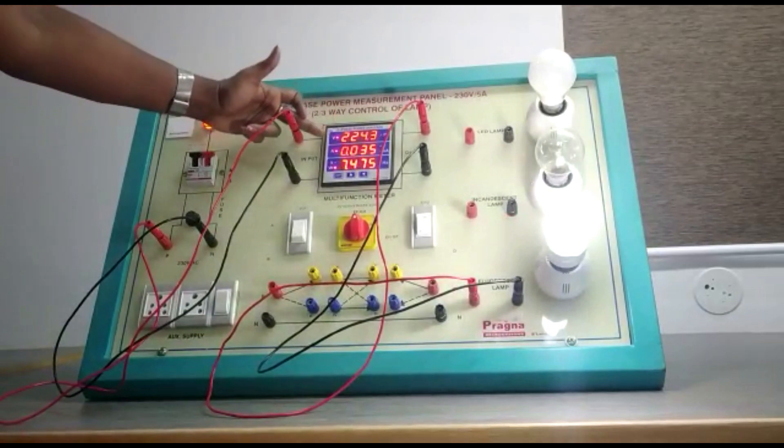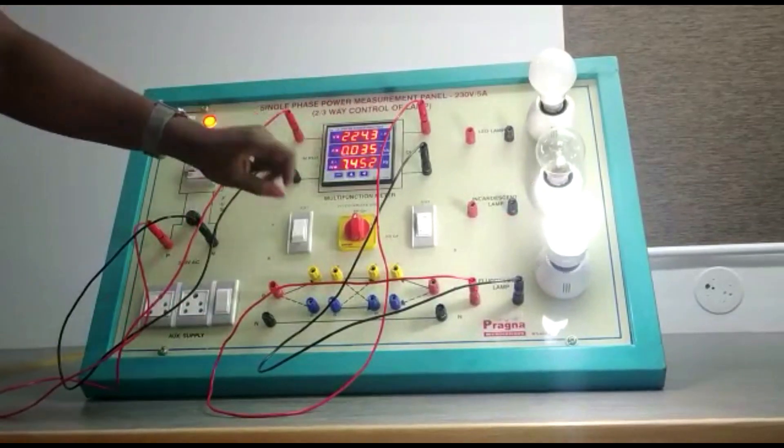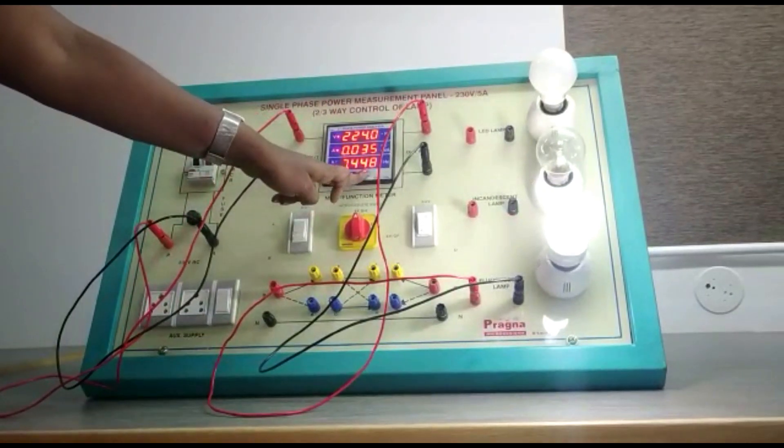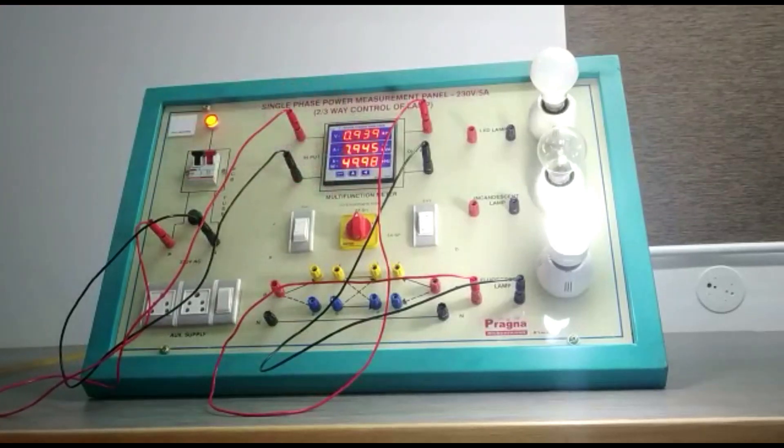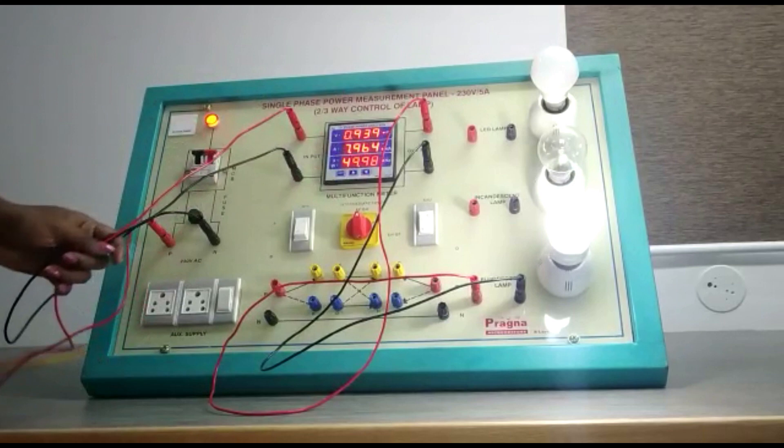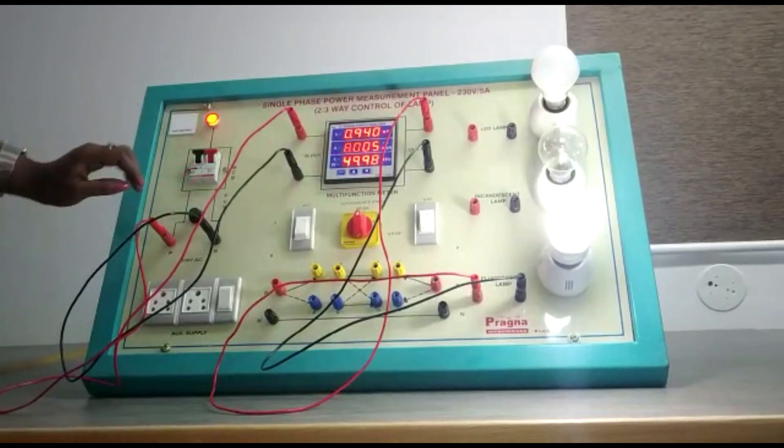You can note down the voltage, current rating, and power. Hold this for a few seconds and you will be able to see the power factor and frequency. Note down those values as well.